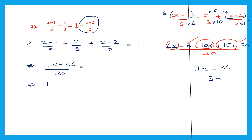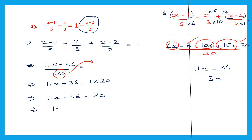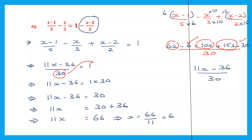So that is 11x minus 36 is equal to 1 into 30. We have transposed this 30 to the right hand side — it becomes multiplication. So here what do we have? 11x minus 36 equals 30. Therefore 11x is equal to 30 plus 36 is 66. That means x is equal to 66 divided by 11. 11 6s are 66. So we have found the answer. x is equal to 6. This is our final answer.